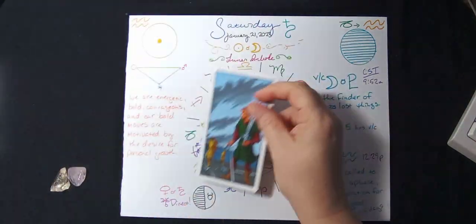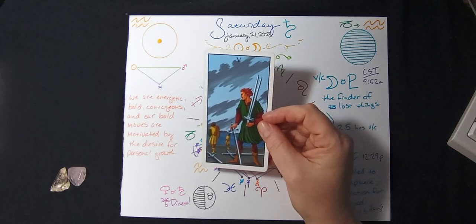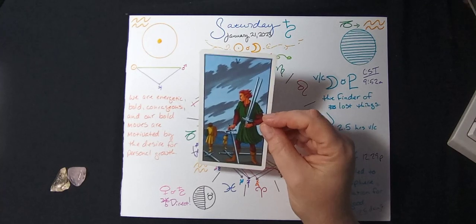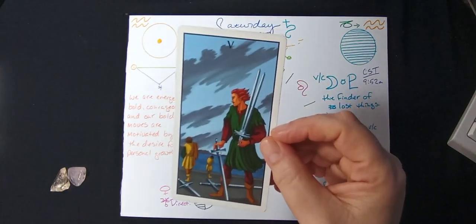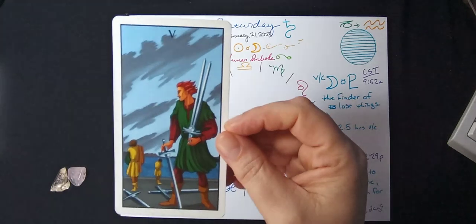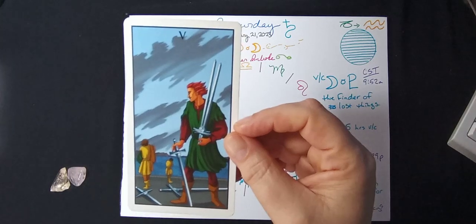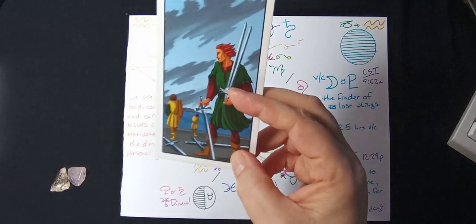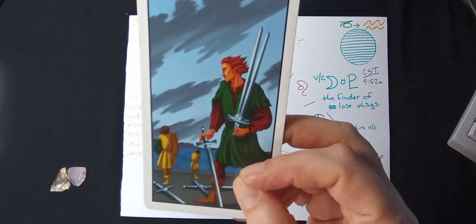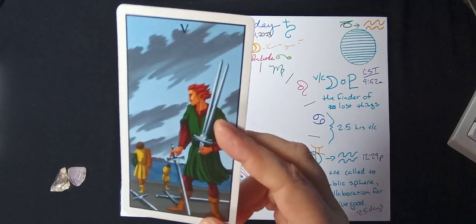And so we come to the Five of Swords. Five is sort of a moment of breakdown in these cards across the board, as far as the suited cards go. And in swords, you see this person here who seems to be very happy with a victory that they've just won. They're holding three of the swords. There are a couple of swords on the ground. You see a couple of people off in the distance looking kind of dejected. But this guy's got the wind in his hair. He feels great.